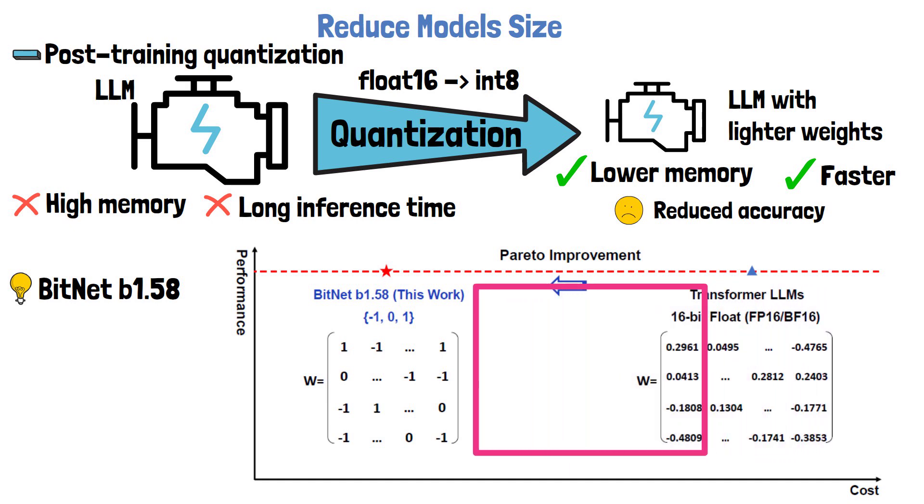On the left, where the cost is lower, we have the new BitNet model. However, the performance is the same, which we can see with the red dotted line, which makes it super interesting and promising for the future. We can also learn from this figure that the weights are ternary, meaning that every weight is either minus 1, 0, or 1.